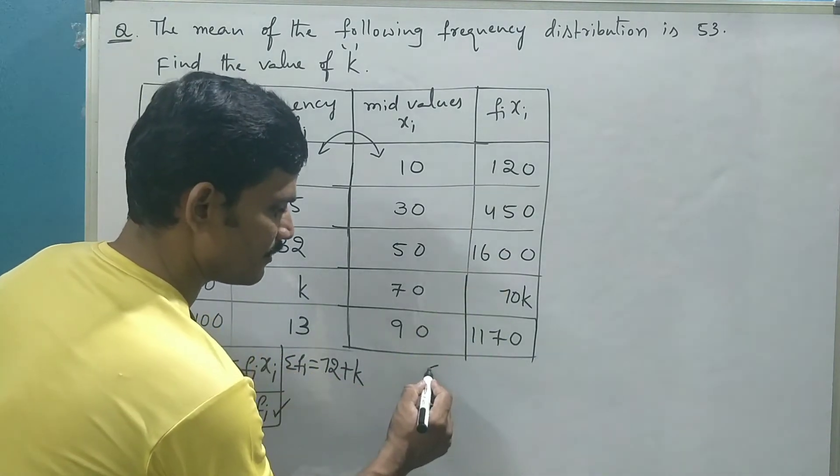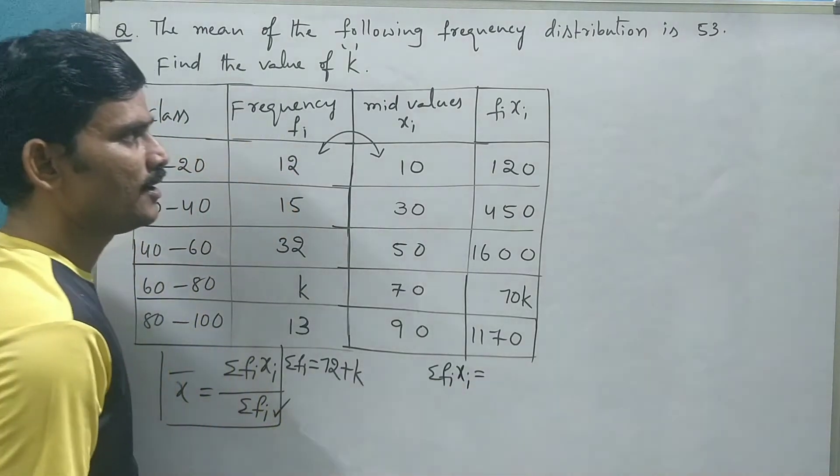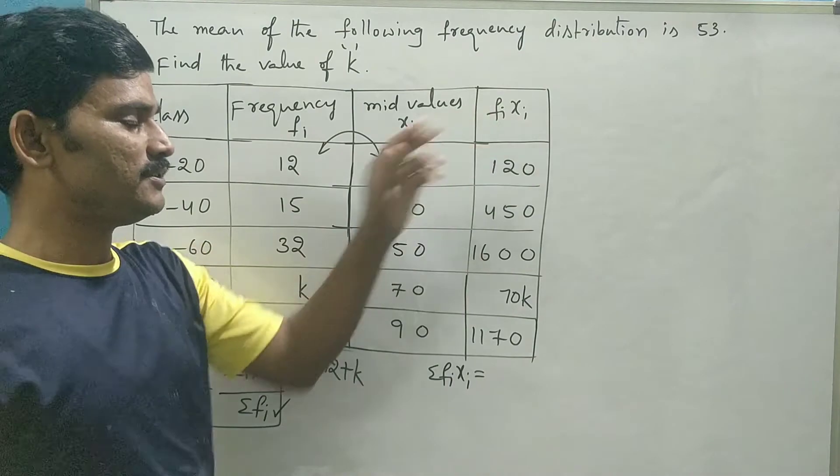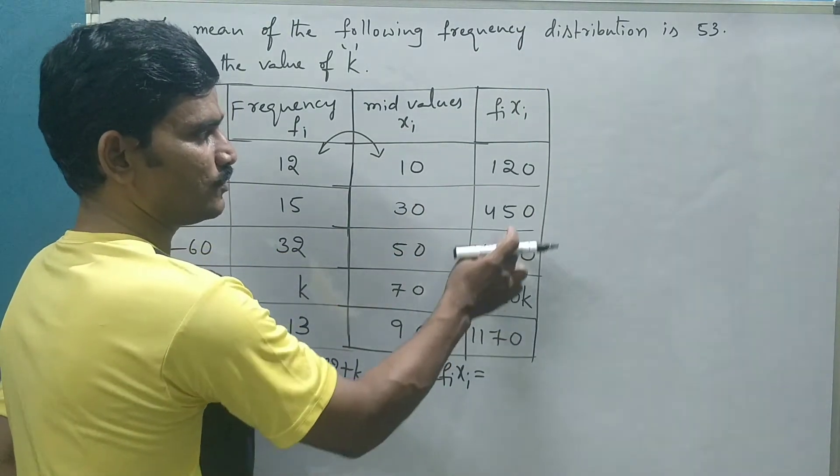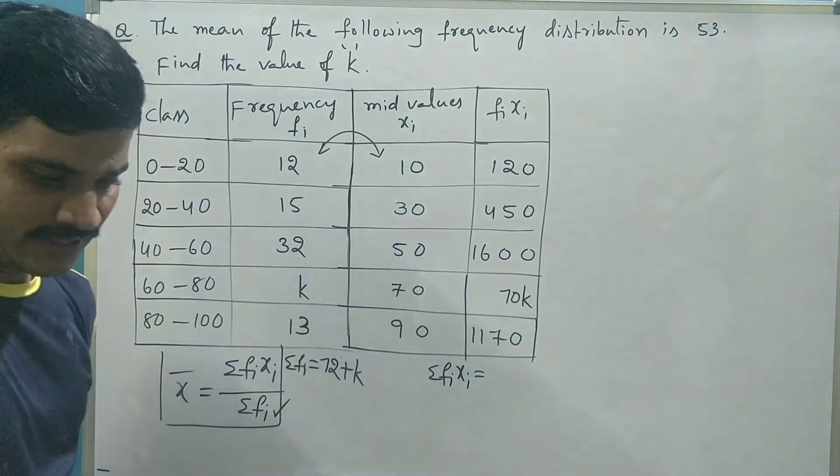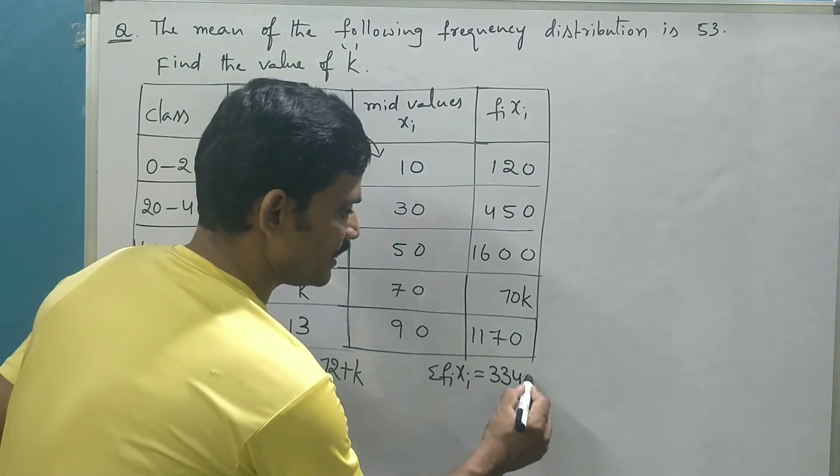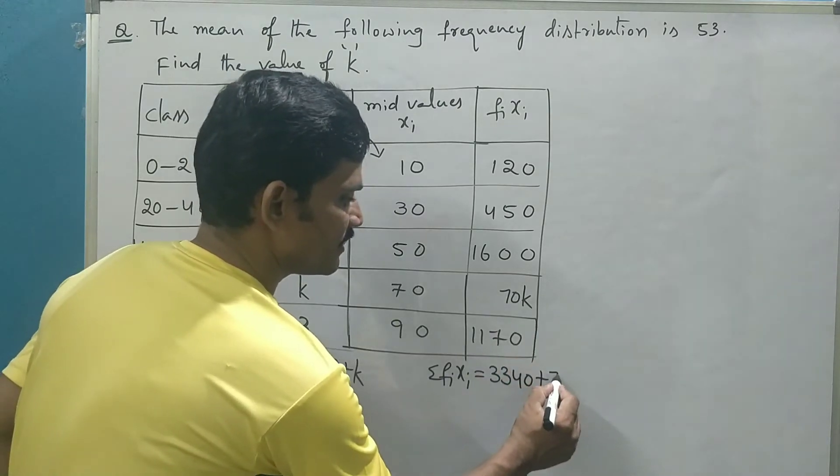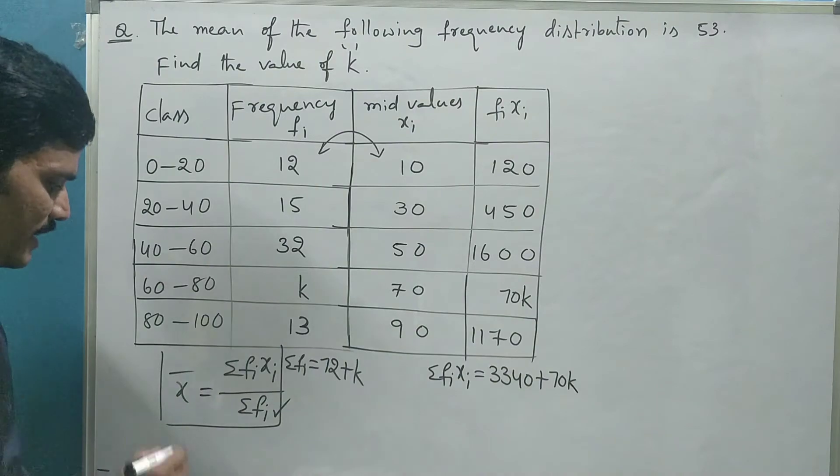Now from this column, you can get Σfixi, sum of the product of mid values with frequencies. If you sum up 1, 2, 3, 4, you would get 3340 plus variable is 70k.